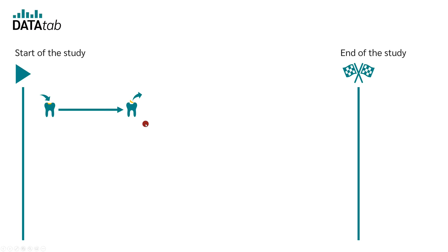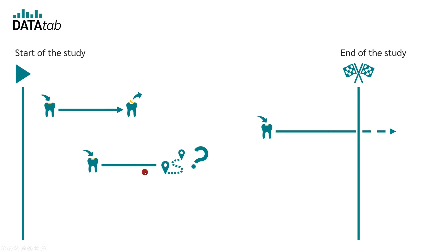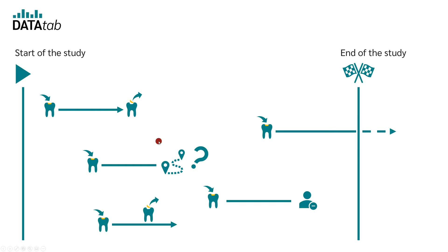It is also possible that a filling is inserted and then the end of the study is reached before the event occurs. Or it can happen that a test person decides not to continue with the study. In both cases, it is not known when or if the event under consideration has occurred. What else can happen is that another event occurs which is not considered in the study — for example, the patient could die or lose the entire tooth. In both cases, the event that the filling breaks out can no longer occur.